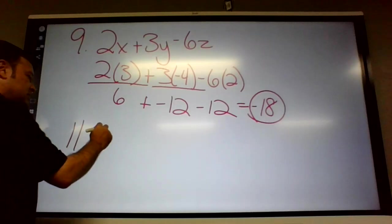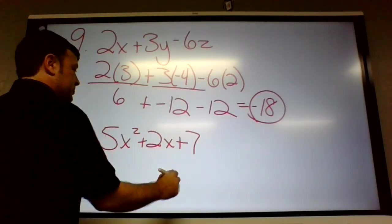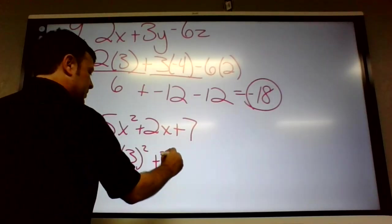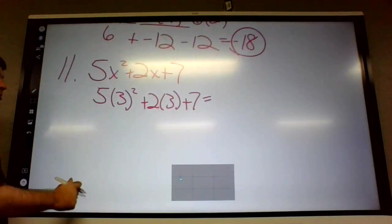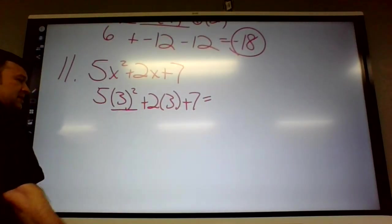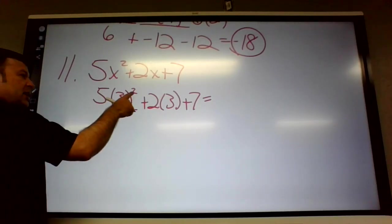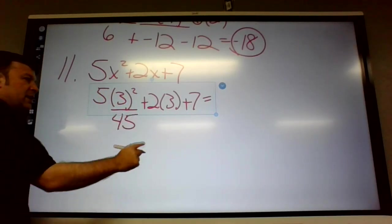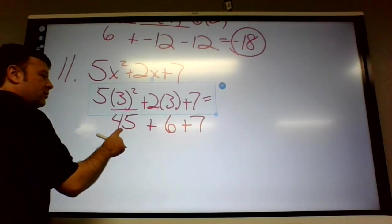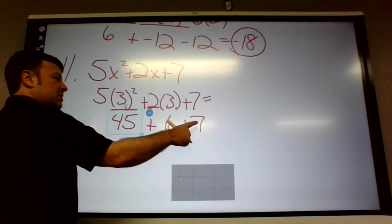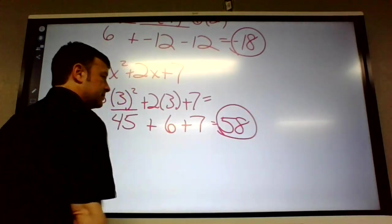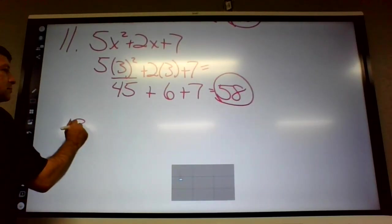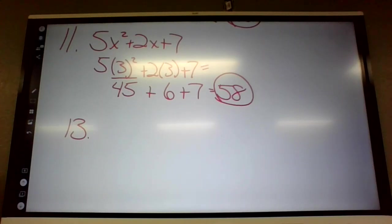Number 11. 5x squared plus 2x plus 7. Well, there's only one variable on this one. It's x, and x is 3. So it's 5 times 3 squared plus 2 times 3 plus 7. So what do I do first to order of operations? 3 squared first. Exponents first. 3 times 3 is 9. 9 times 5 is 45. 2 times 3 is 6. So 45 plus 6 is 51 plus 7, 58.